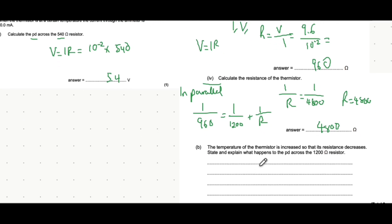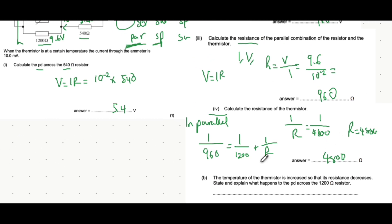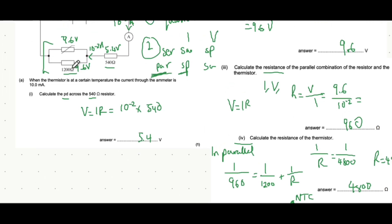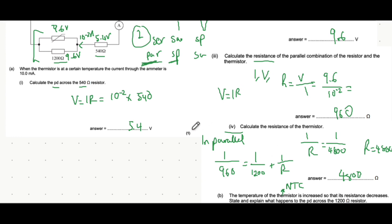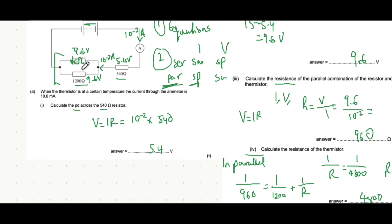The temperature of the thermistor is increased so its resistance decreases — expected because a thermistor has a negative temperature coefficient. So the thermistor's resistance is now less than 4800 ohms. We need to explain what happens to the PD across the 1200 ohm resistor. When the resistance of one branch in a parallel combination decreases, the total resistance of the parallel combination actually increases.